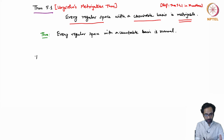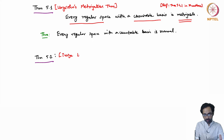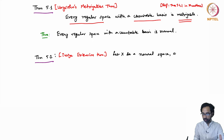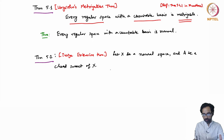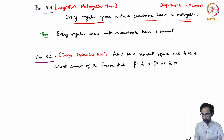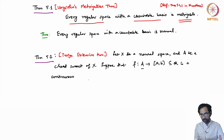What is the Tietze Extension Theorem? This is the Tietze Extension Theorem: let X be a normal space and A be a closed subset of X. Suppose that F is a continuous function — when I say continuous function, we take the subspace topology.